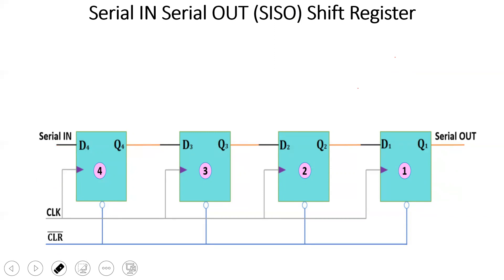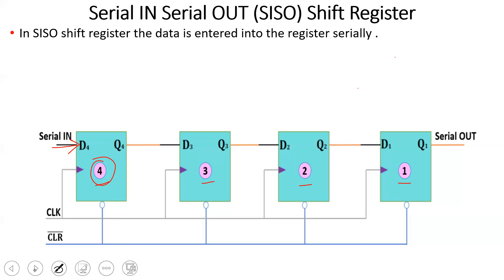For a 4-bit register, I will use 4 flip-flops, named flip-flop four, three, two, and one. To load information into the register, a flip-flop with input zero produces output zero, and a flip-flop with input one produces output one. For a right-shift operation, flip-flop number four receives the input first.